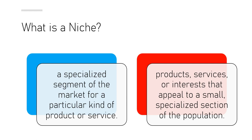A niche lets you narrow down so that you only work with certain people. Your products, services, and interests are not necessarily going to appeal to everyone. We buy things in cycles — some things we need to run our homes, things that help us get where we need to go, things we buy in summer or winter months, and things we buy on an as-needed basis. We're all consumers of something in a lot of different categories.